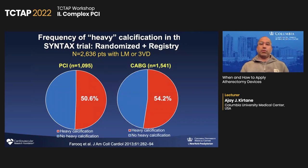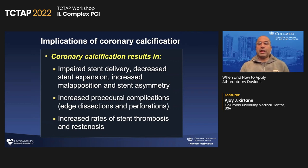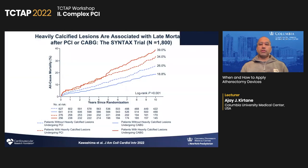In more recent studies like the Syntax trial, where we're talking about surgical-type multi-vessel disease, the prevalence of severe calcification was up to half of cases, associated with bad outcomes both with surgery and with stenting. Coronary calcification makes it difficult to deliver stents, and especially there's decreased stent expansion, increased malapposition and stent asymmetry when there's calcium in the coronary artery. It's also associated with increased procedural complications such as dissections and perforations, as well as increased rates of stent thrombosis and restenosis.